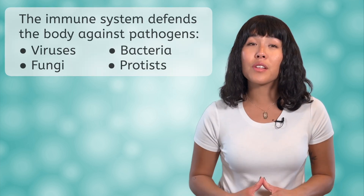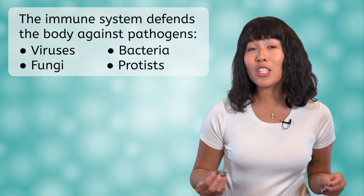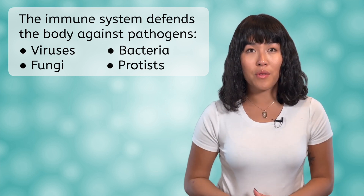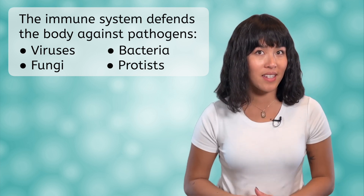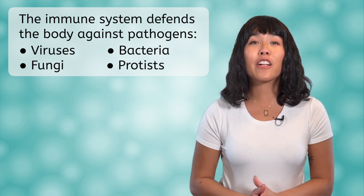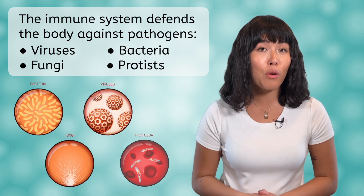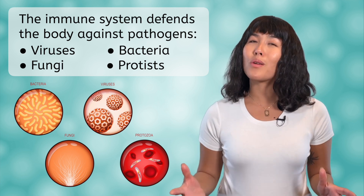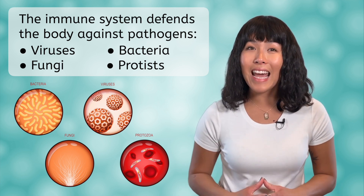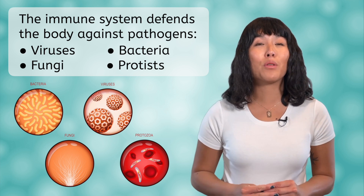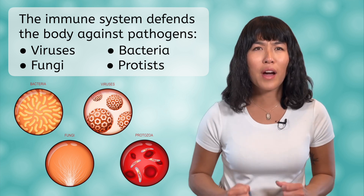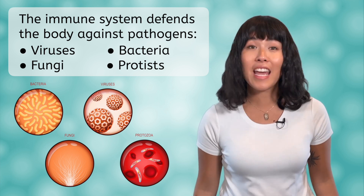The immune system is a complex network of cells, tissues, and organs that work together to defend the body against disease-causing agents, also known as pathogens. These pathogens can include bacteria, viruses, fungi, and parasitic protists. We'll look at the parts of the immune system today to see how it is able to help us fight off these unwanted invaders.